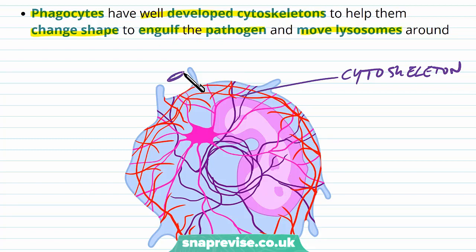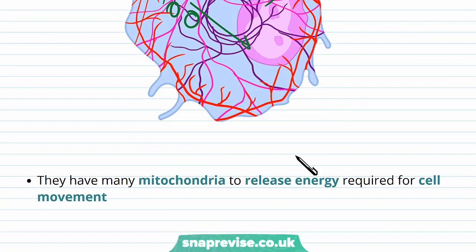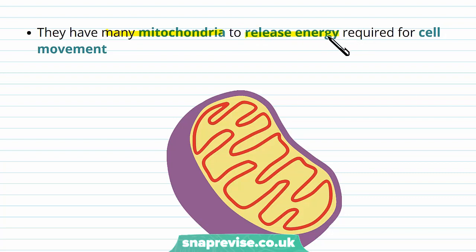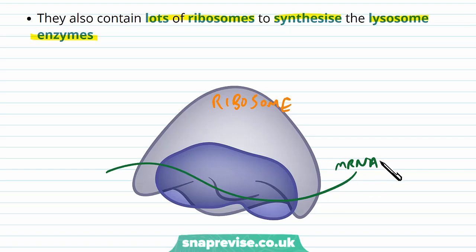This means lysosomes can be sent anywhere around the cell to where the pathogen is being engulfed. Phagocytes also have many mitochondria in their cells which release energy, and this is useful because cell movement and the process of phagocytosis uses lots of energy — so the more mitochondria we have, the more ATP the cell can produce. They also have lots of ribosomes, which are involved in protein manufacture. The purpose of this is to synthesize the lysozyme enzymes — ribosomes read mRNA and from this produce all of the lysozyme enzymes that go into lysosomes, so there are plenty of enzymes to help break down the pathogens.